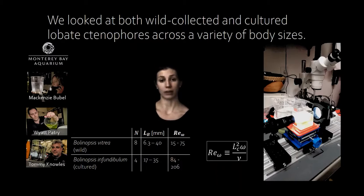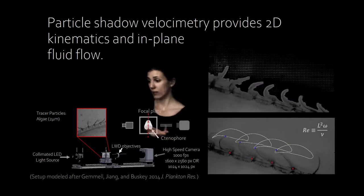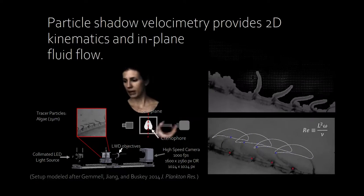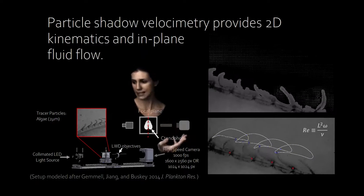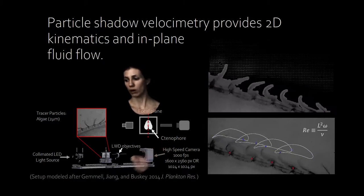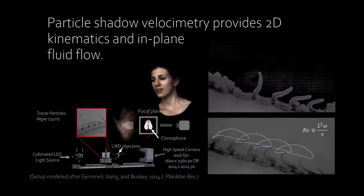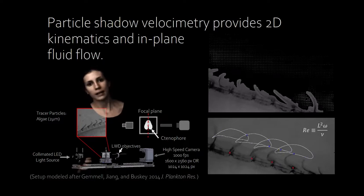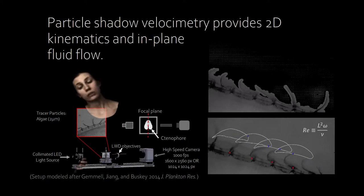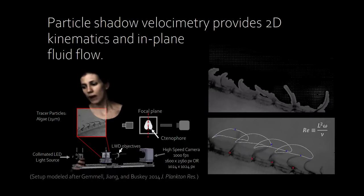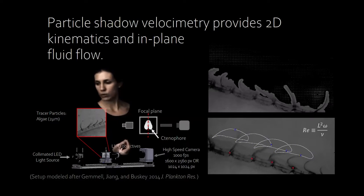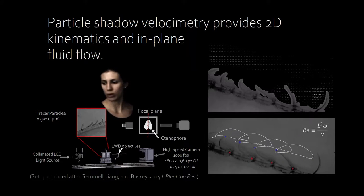So here you can see a breakdown of our experimental setup. The collimated LED backlight illuminates not just the specimen but also the fluid tracer particles that we put into the water. Here we're using algae as a fluid tracer. The algae is technically motile so it's not a 100% passive tracer but it swims much more slowly than the flow speed we're recording. We can track the shadows of the algae tracers and use particle shadow velocimetry, which is similar to but not identical to PIV, particle image velocimetry.